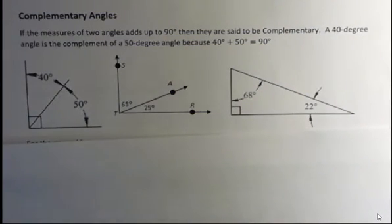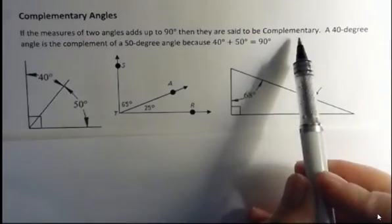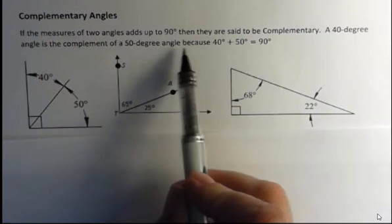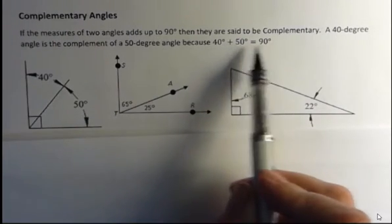Complementary angles. If the measures of two angles add up to 90 degrees, then they're said to be complementary. A 40 degree angle is the complement of a 50 degree angle because 40 plus 50 equals 90.